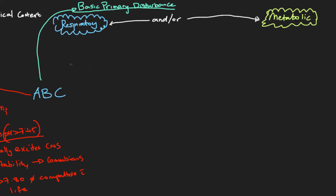As we've discussed in previous videos, every cellular and metabolic process that uses an aerobic mechanism of breaking down glucose creates CO2 — carbon dioxide. Carbon dioxide is the byproduct of that metabolism. Carbon dioxide then dissolves into the blood, and when it dissolves it forms carbonic acid.